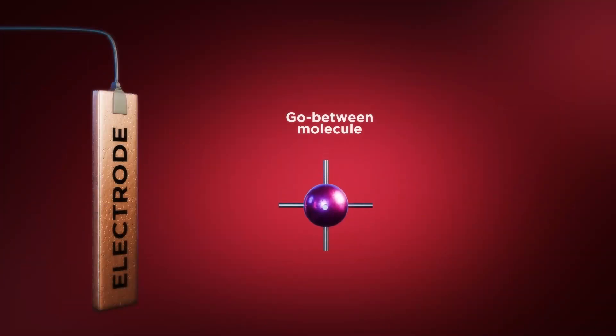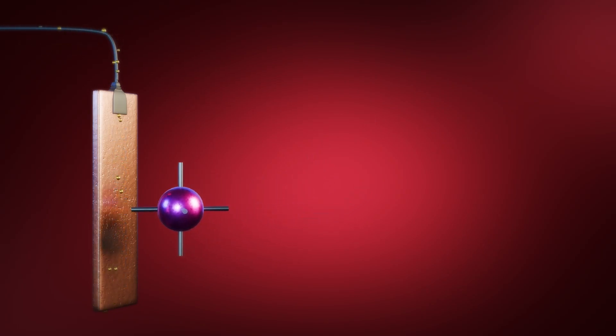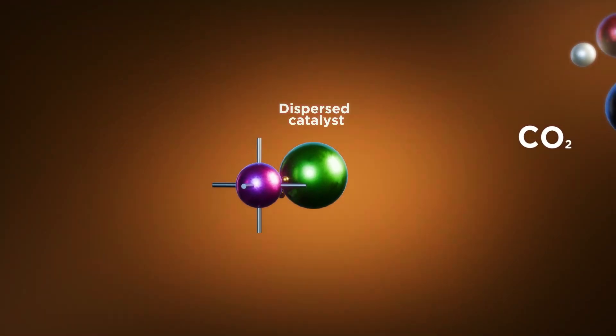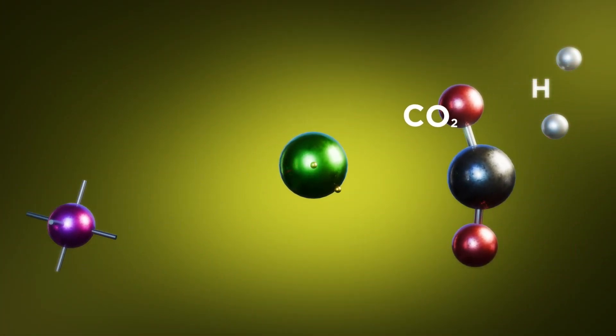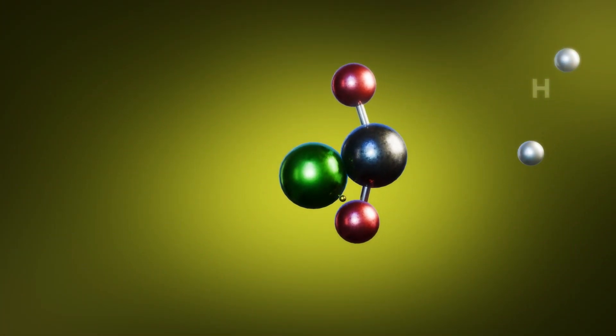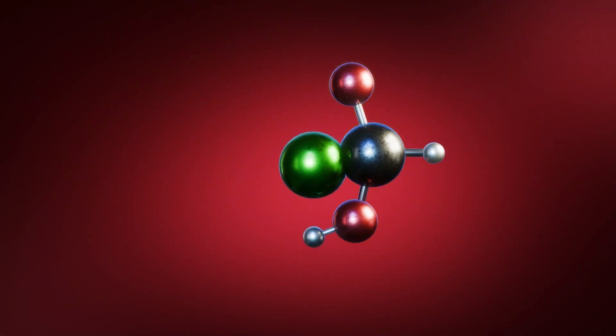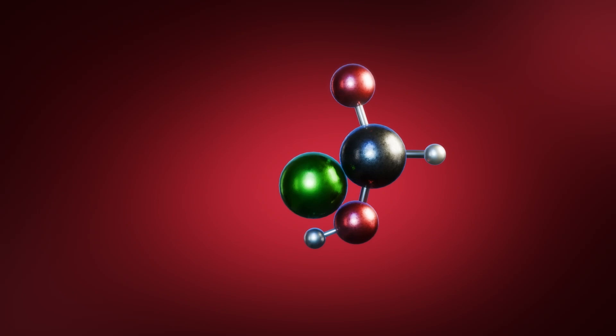When an electrochemical reduction reaction is decoupled, different go-between molecules gain electrons from the electrode instead. These electrons are then transferred to a dispersed catalyst, which itself triggers the reduction of carbon dioxide molecules. A dispersed catalyst is not constrained to a two-dimensional surface and does not need to be electrically conductive,